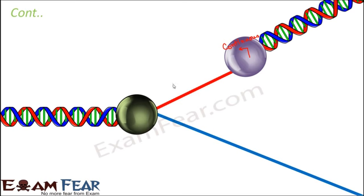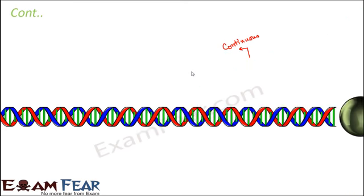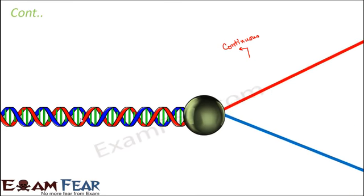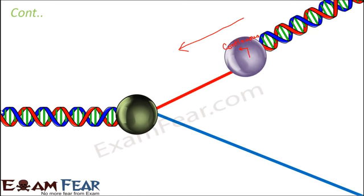Looking at the animation, the growth of the replication fork is in the same direction as DNA synthesis on the leading strand. As helicase moves, the replication fork grows in that direction. DNA polymerase also synthesizes in the same direction — this is why it is called continuous synthesis, because the new strand is being created continuously.